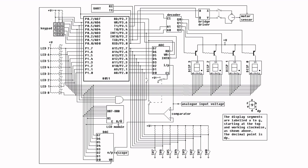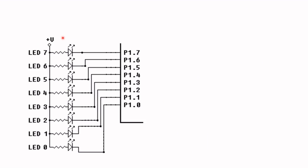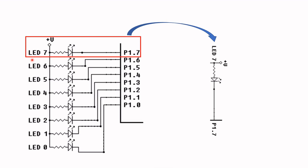We're going to concentrate on this part of the circuit. I'm going to extract this part out. I have removed the other parts of the circuit so that we can examine the LED connections, or interface, to Port 1. I'm going to extract this part of the circuit diagram.